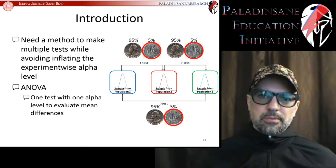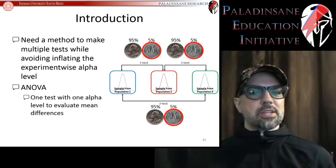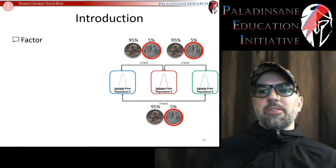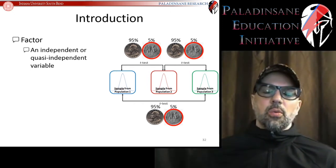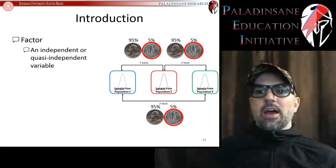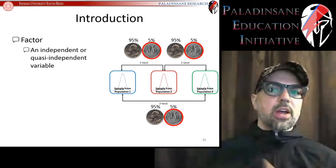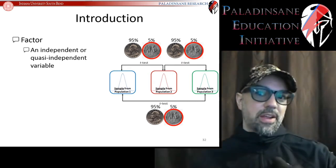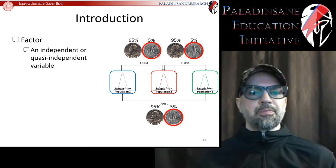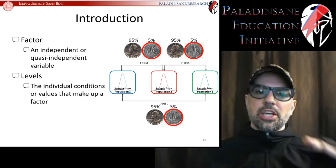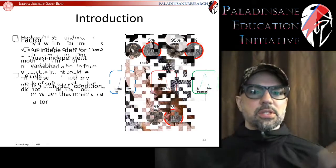Before we get to the ANOVA, we need to define a couple of terms. First: factor — this simply stands for the independent or quasi-independent variable, the cause you're testing. You can have one factor or multiple factors. In psychology, multiple causes are usually what is tested. Second: levels — these are the individual conditions that make up your factor, the individual values your factor can take.